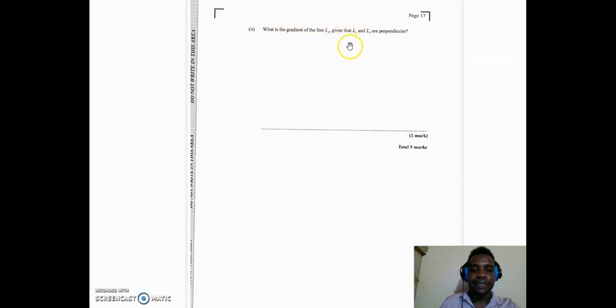If the gradient of line 1 was negative 1 half, if I reciprocate that, I'm going to get 2 over 1, and we negate that. So we end up with a positive 2. So the gradient of line 1 was negative 1 half. So the gradient of line 2 must be the negative reciprocal. We can write a statement here that says gradient of L2 equal positive 2. So we reciprocate the negative 1 half and we negate it, which gives me a positive 2 here.